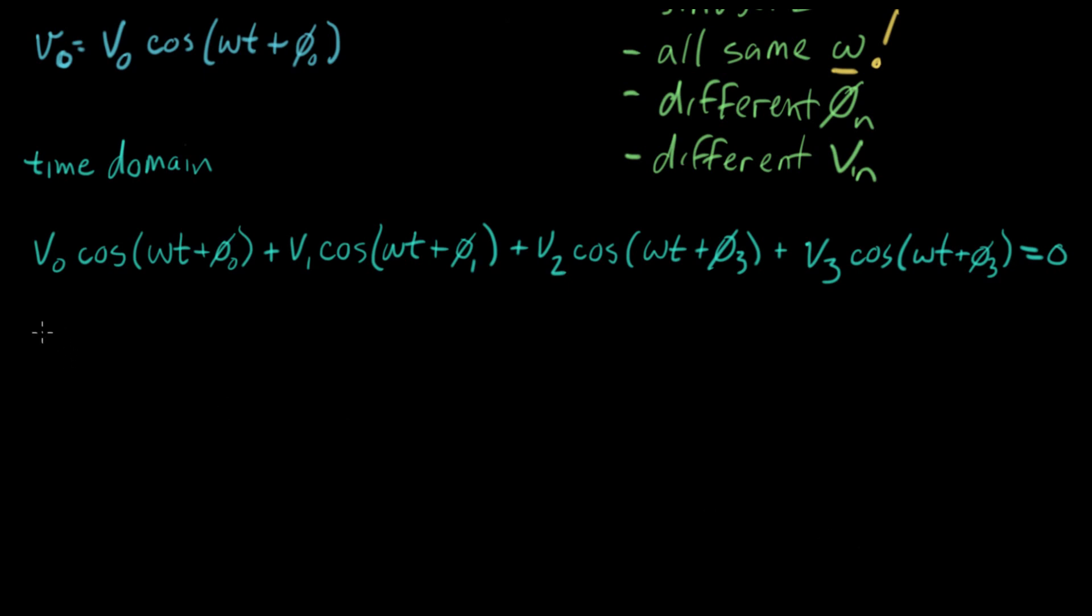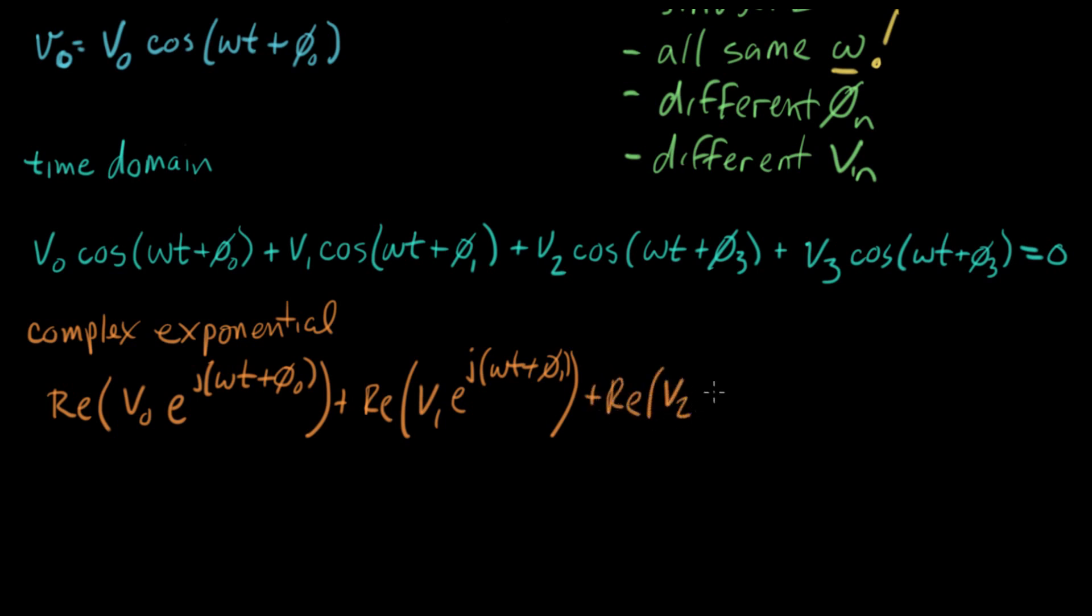Now I'm gonna switch to complex exponential notation. We're just changing notation here. We can represent this as the real part of V₀ e^(j(ωt+φ₀)). That's exactly the same as this cosine. This cosine can be represented as the real part of a complex exponential with this frequency. And I can write out the rest of these: Re(V₁ e^(j(ωt+φ₁))) + Re(V₂ e^(j(ωt+φ₂))) + Re(V₃ e^(j(ωt+φ₃))) equals zero.